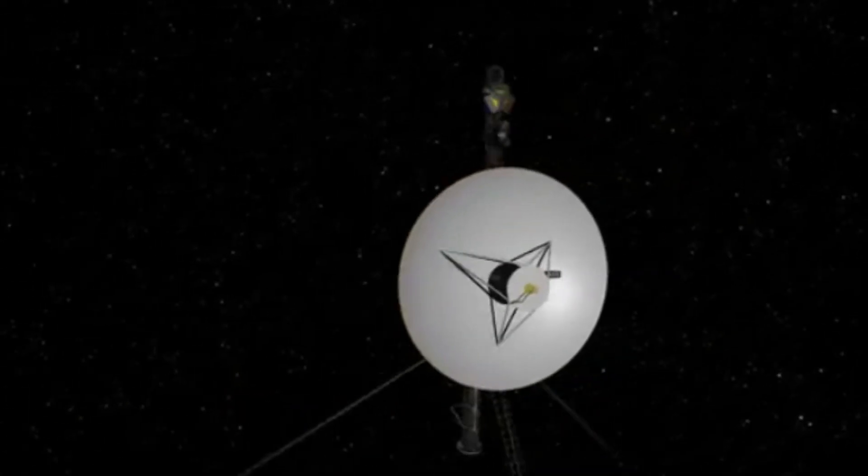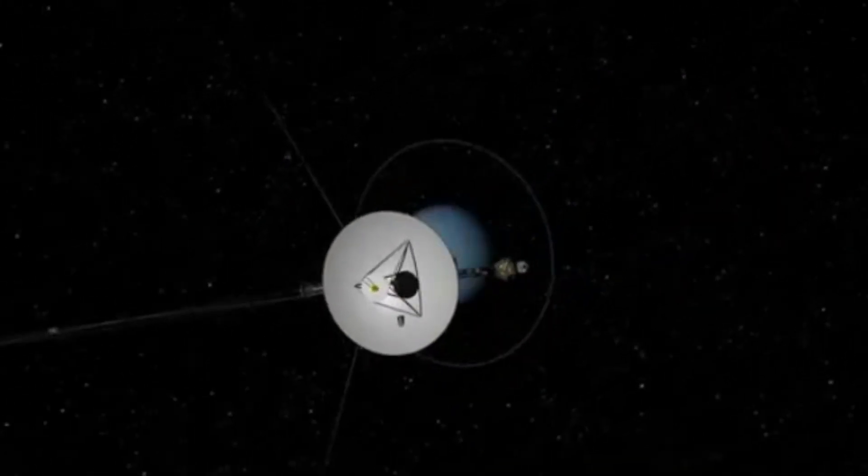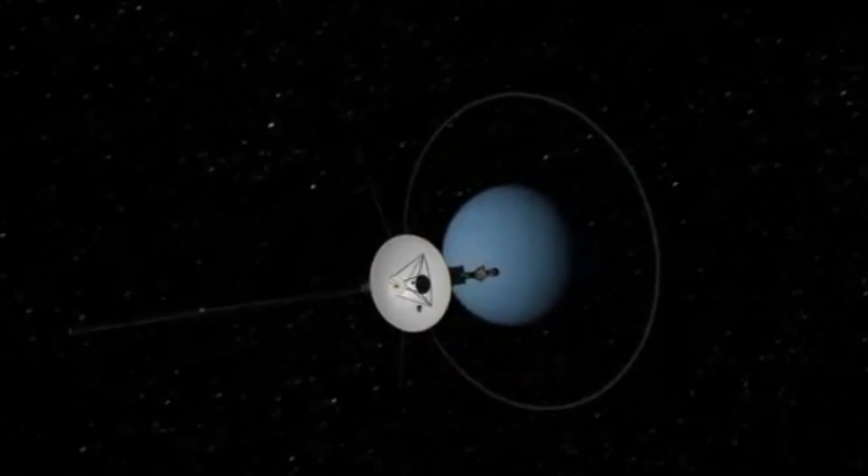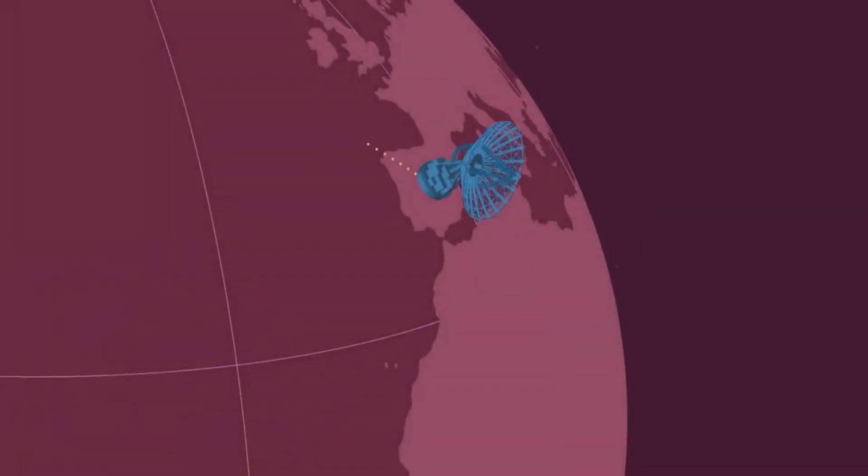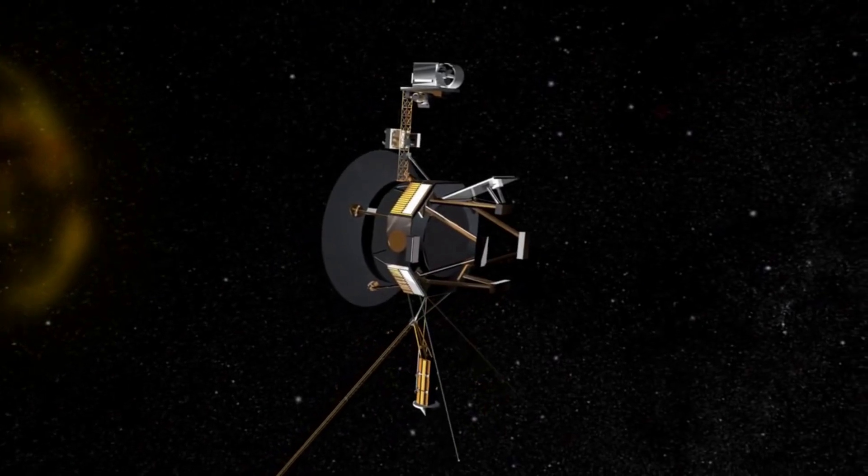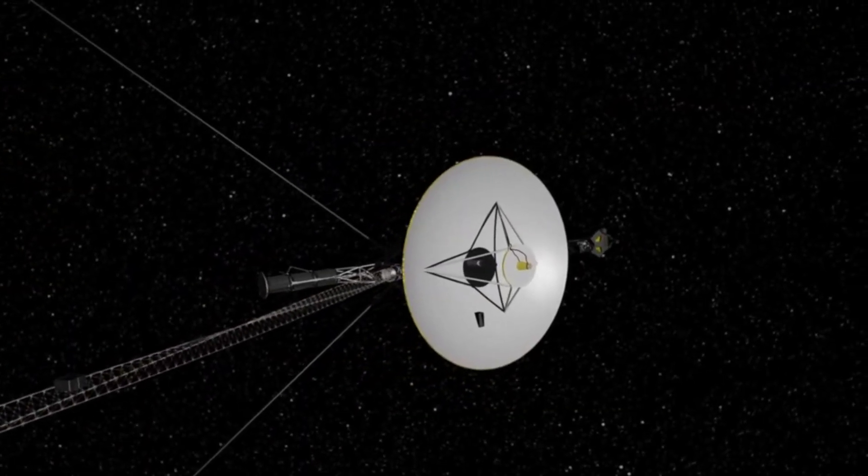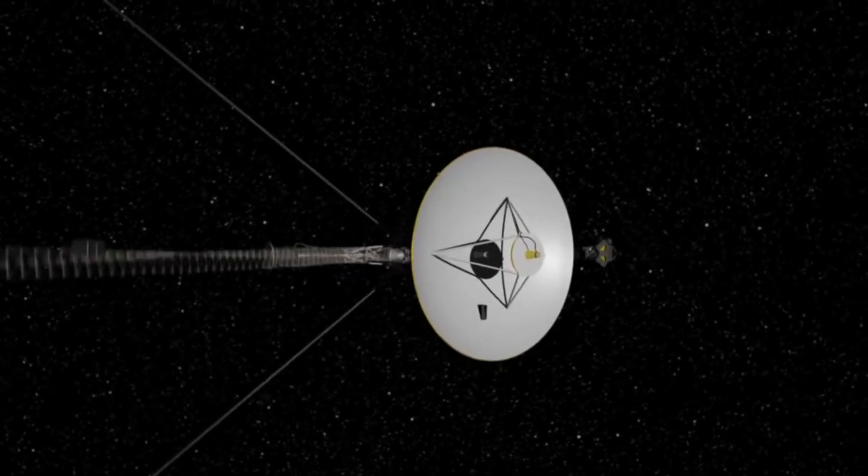NASA said that although the mission expects the spacecraft to point its antenna at Earth in mid-October, the team will attempt to command Voyager sooner while its antenna is still pointed away from Earth. To do this, a DSN antenna will be used to shout the command to Voyager to turn its antenna. This intermediary attempt may not work, in which case the team will wait for the spacecraft to automatically reset its orientation in October.